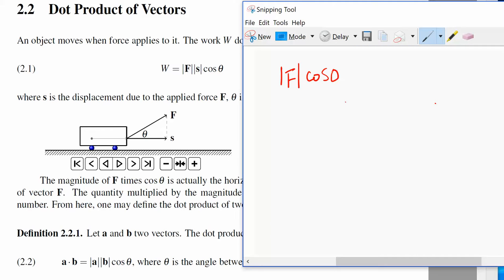Then this is going to be the projection of F on the direction horizontally from left to right. So this is the force projection in the horizontal direction.